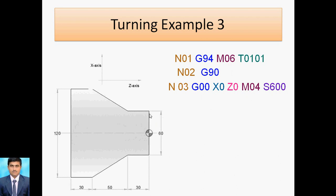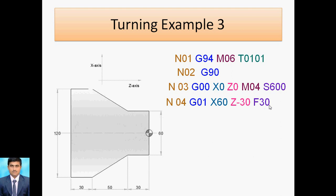The tool approaches the first height: X60 and Z minus 30. G01 is used because linear interpolation is required. F30 is the feed rate in mm per minute. The tool moves from this point to this point linearly.